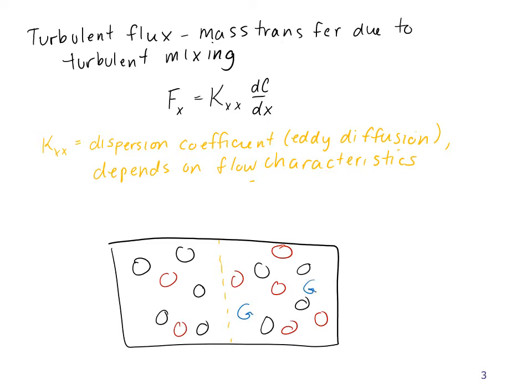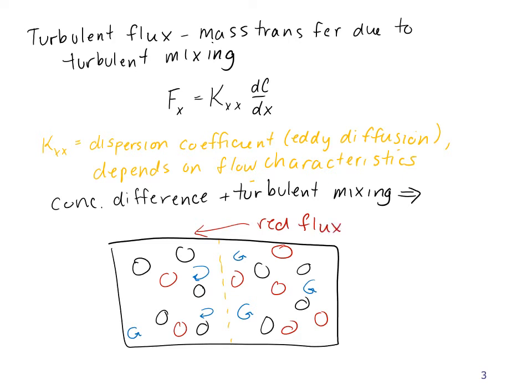We have these little eddies - little circles with arrows on them. Random motions in the fluid lead to a flux from right to left. So again, we have a concentration difference or gradient that leads to a flux of red molecules from right to left.